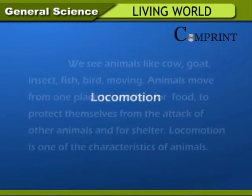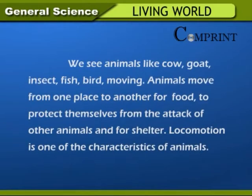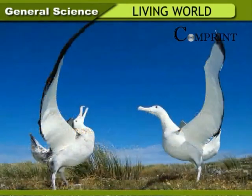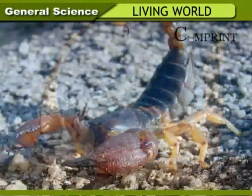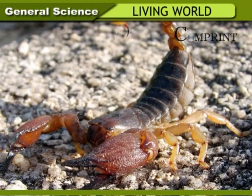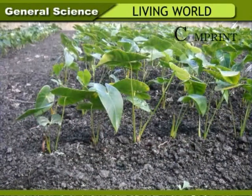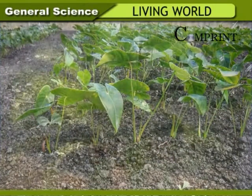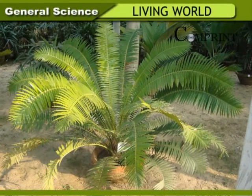Locomotion. We see animals like cows, goat, insect, fish, and bird moving. Animals move from one place to another for food, to protect themselves from the attack of other animals, and for shelter. Locomotion is one of the characteristics of animals. Animals possess different organs for locomotion, called locomotory organs. Plants do not move. They remain where they are throughout their life, fixed firmly into the soil.